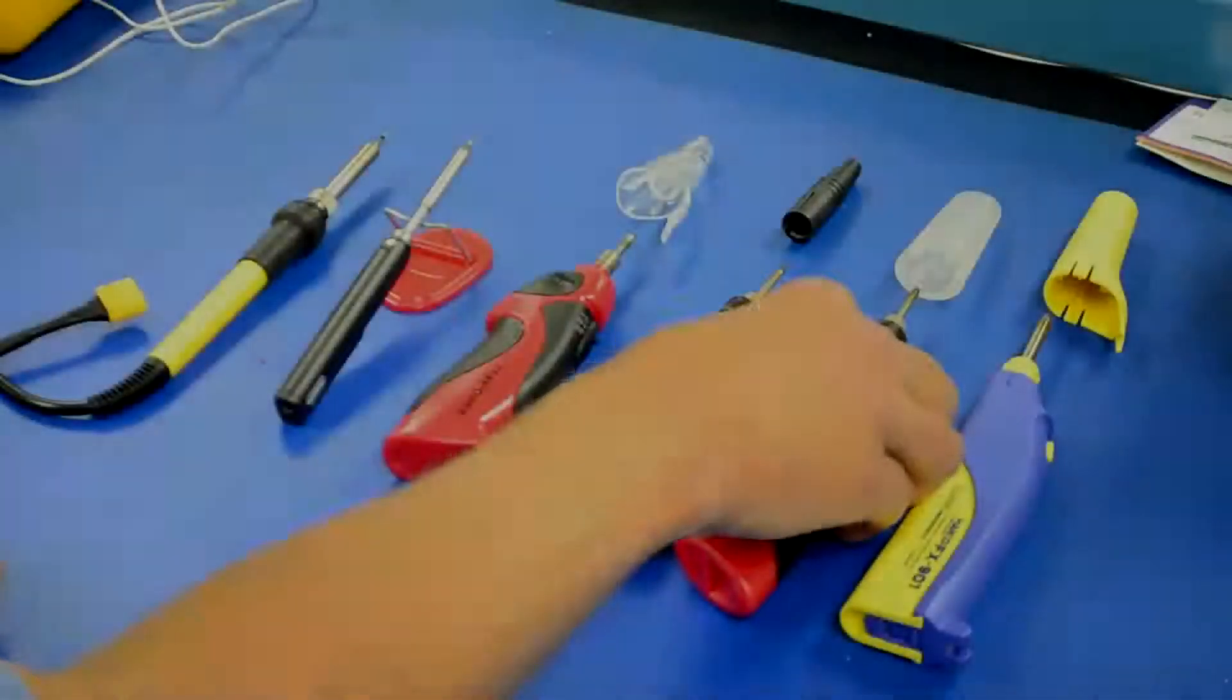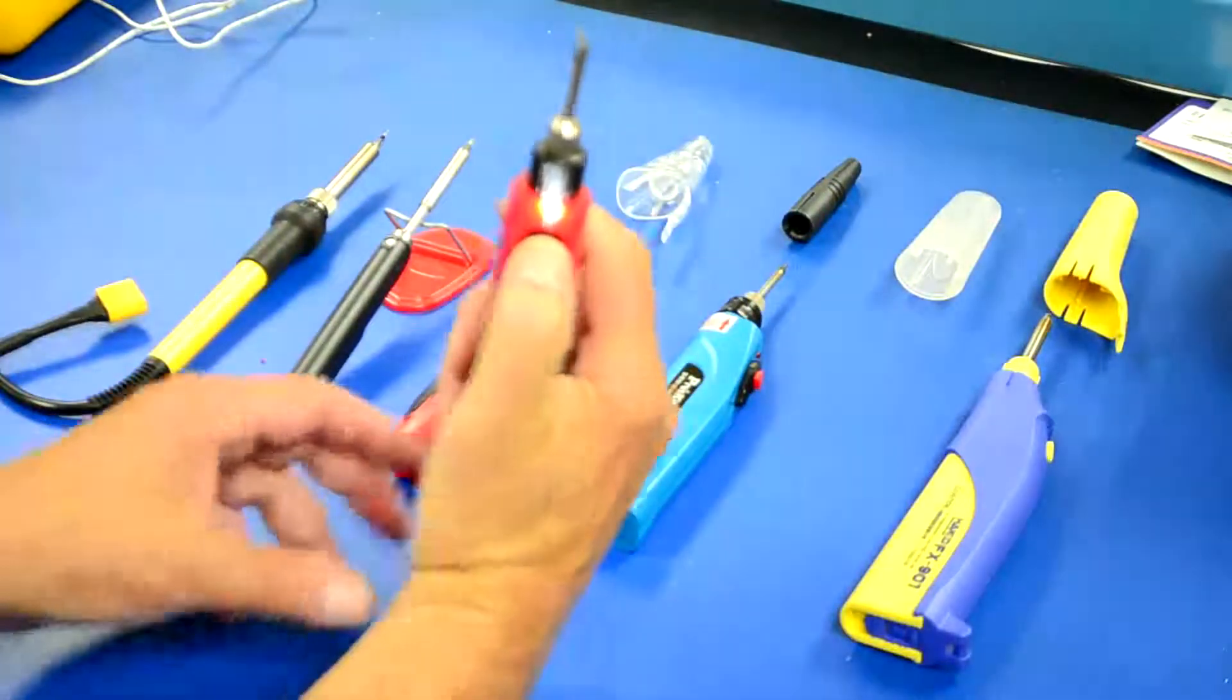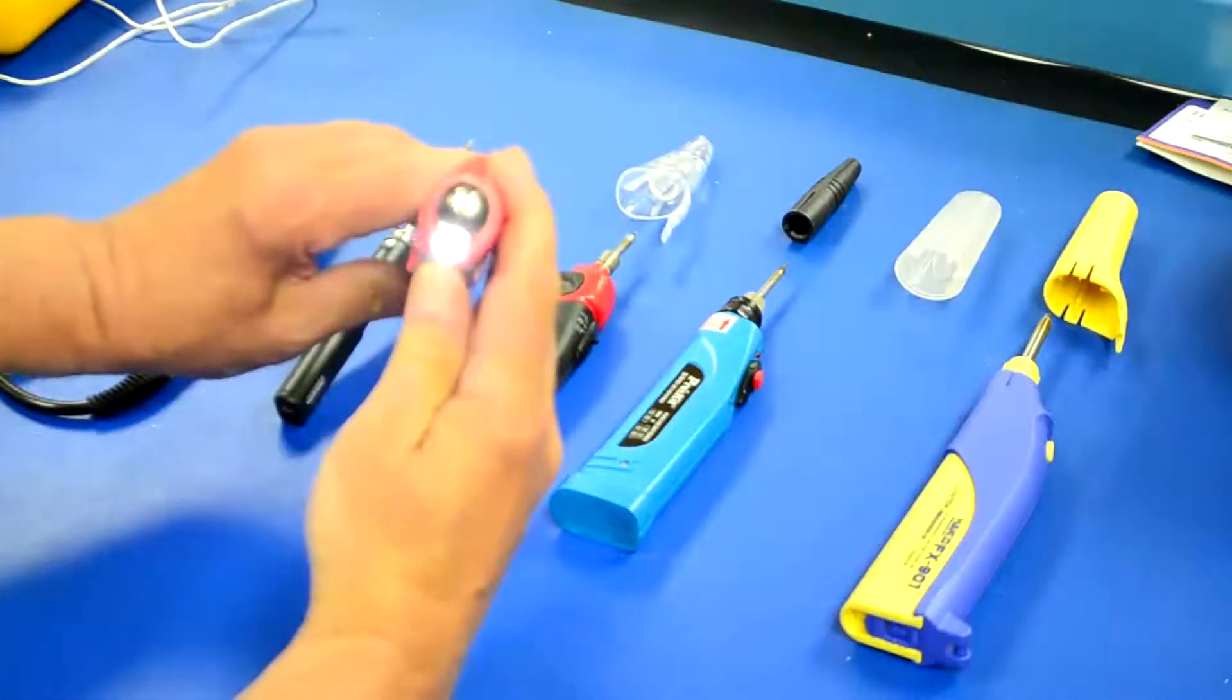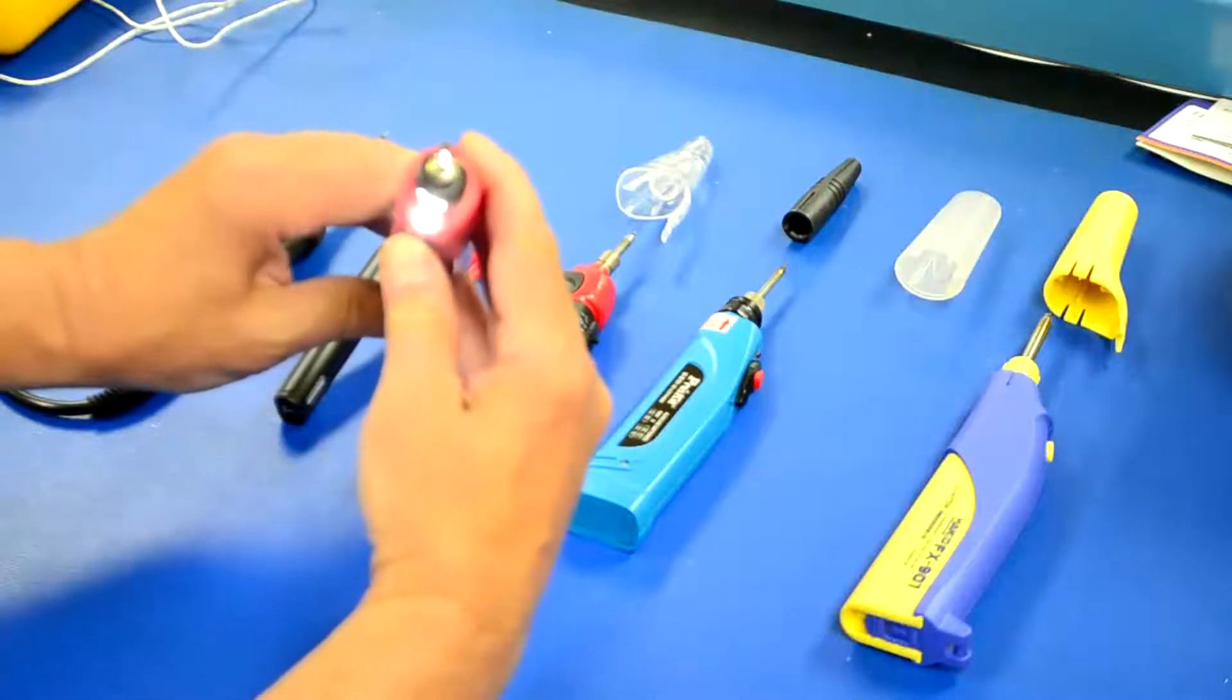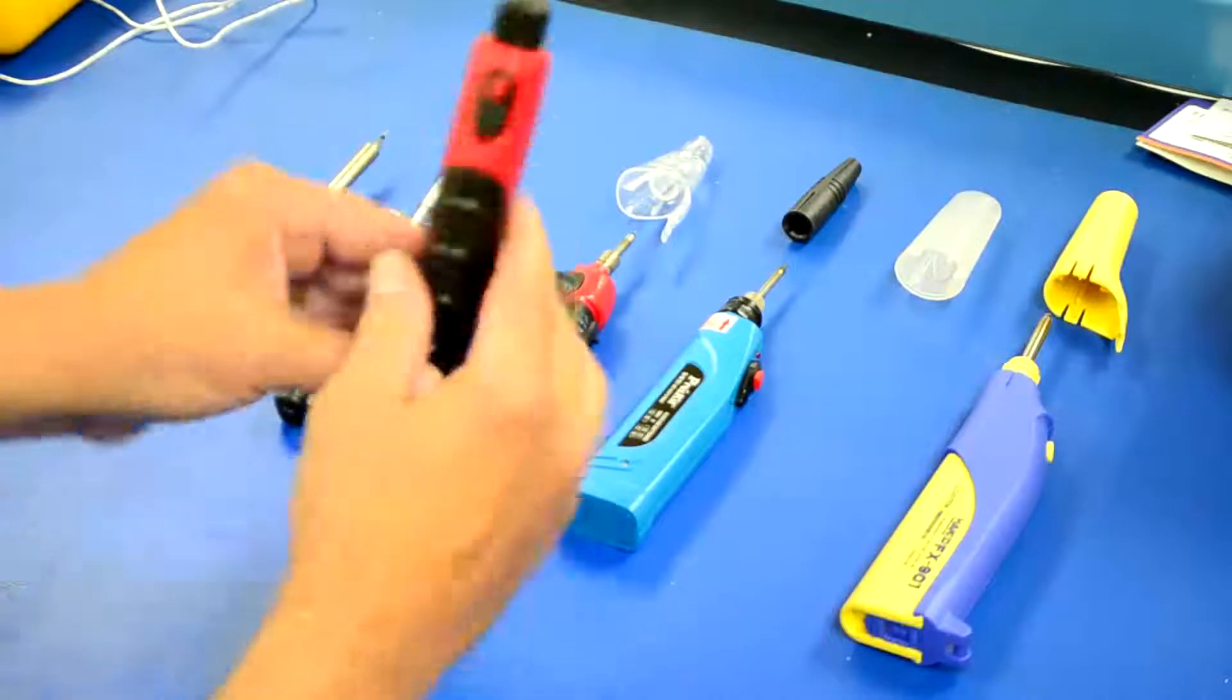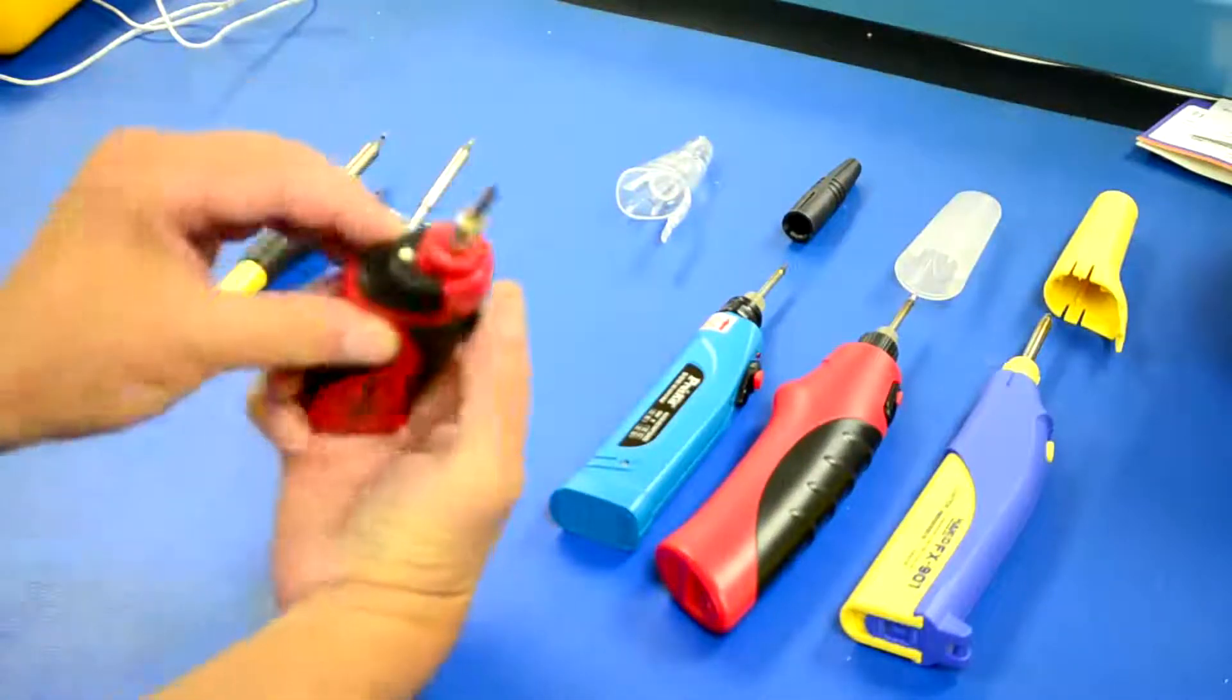Two of these have lights. The Tool Luxe, when you turn it on, has a little LED light there, which may be handy if you're soldering in darker situations. And the Tech Power, this one also has a light.